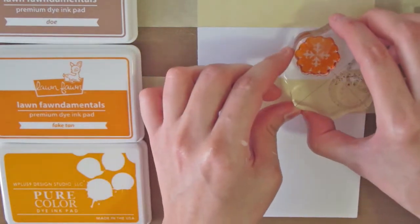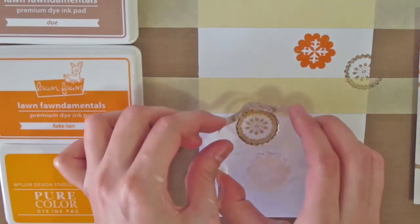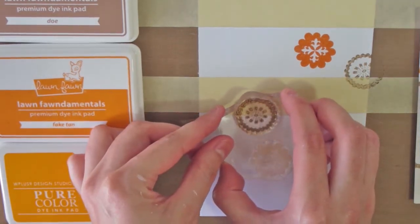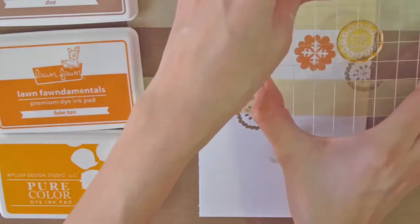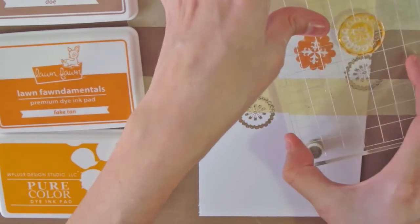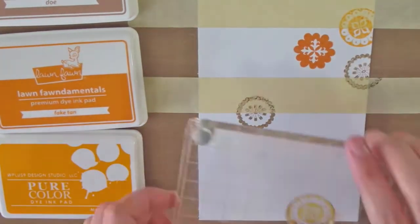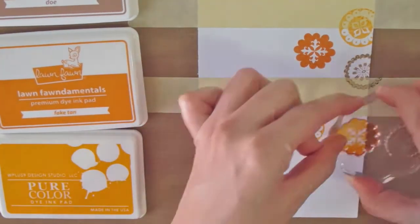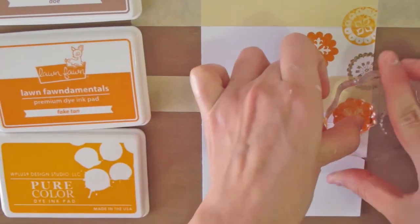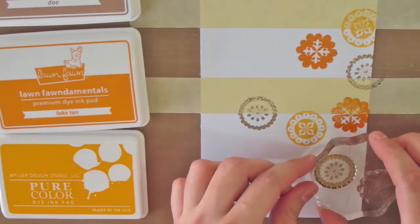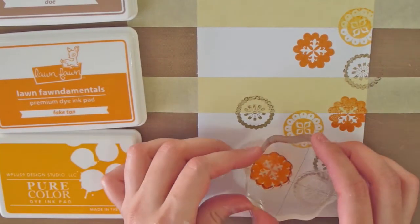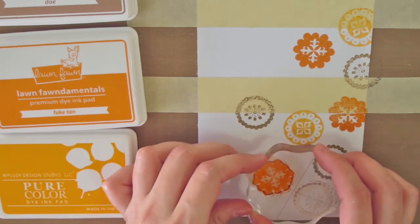I personally am a fan of the pure color dye inks from WPlus9. I have used them many times and they smooth out a lot once they dry, always giving me great results. Anyway, I guess I trust them so much that I didn't really bother to ink up my stamps very well when I used that particular color. So I would say it was my fault if today I didn't get perfect results with that color.